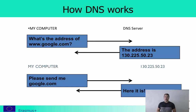When machines are communicating with each other over the internet, what they really use is IP addresses. So when you have an address that you want to look up in a browser, for example google.com, in order to contact the server, you really need to know what is the IP address of google.com. And for this we have the DNS system.